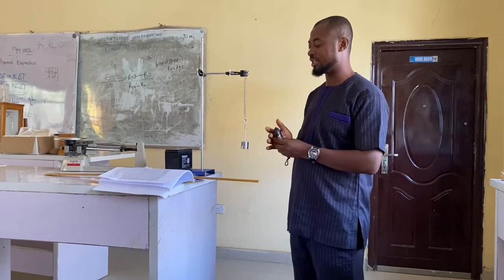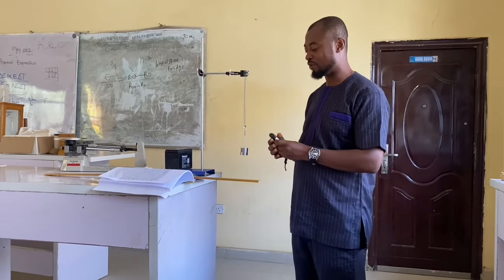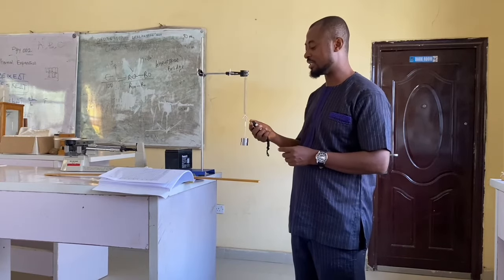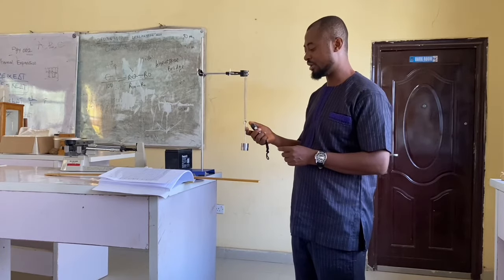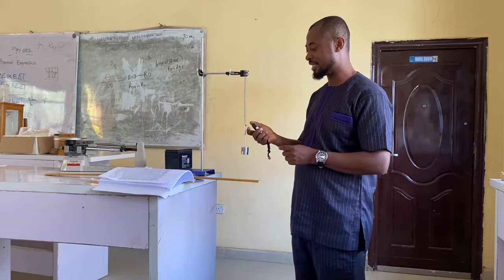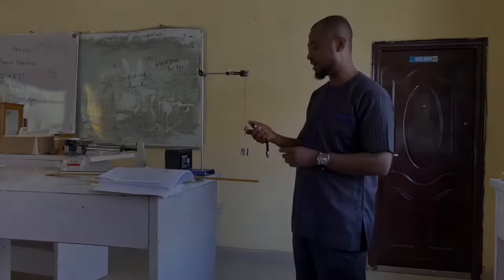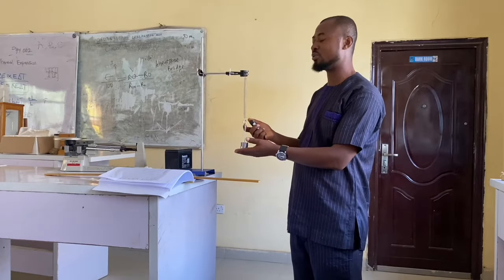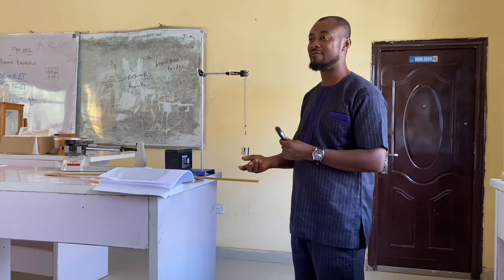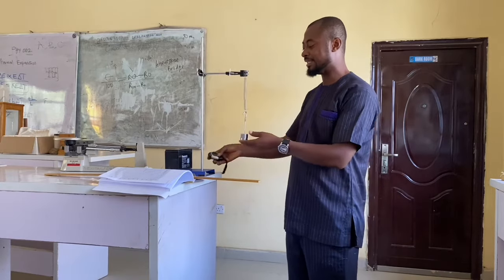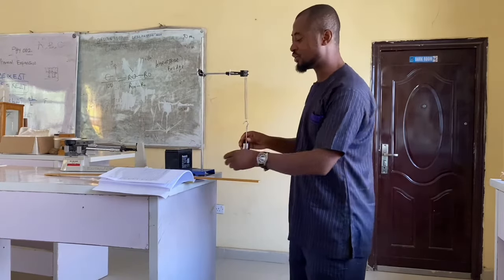I take my stopwatch again and take the time for 20 oscillations: 1, 2, 3, 4, 5, 6, 7, 8, 9, 10. So I have 16.25 seconds. I have to repeat it again for T2, and after repeating it for T2...